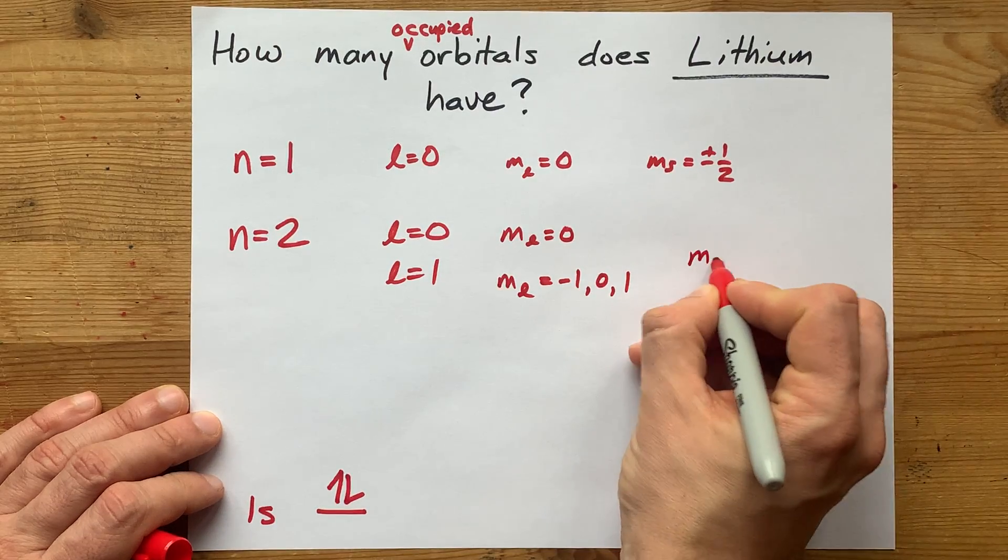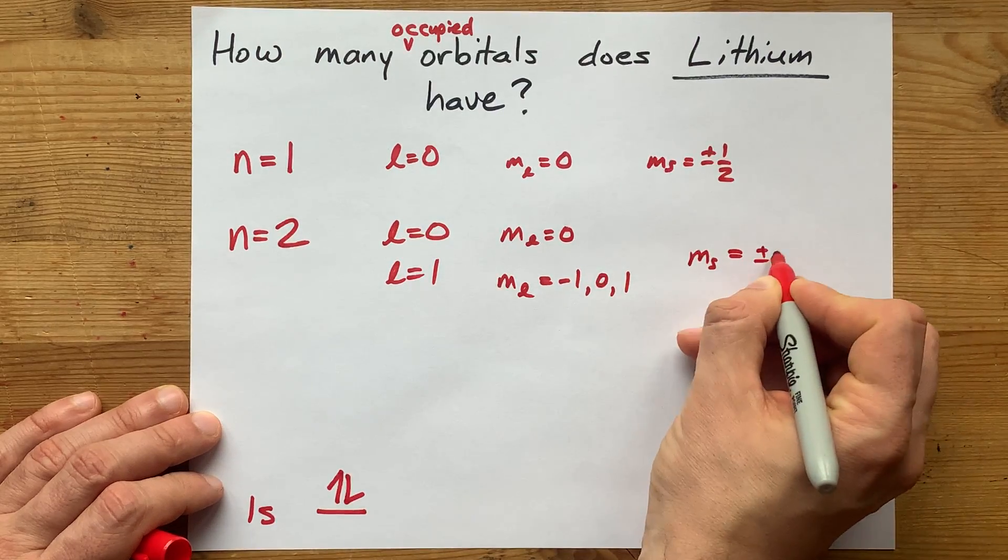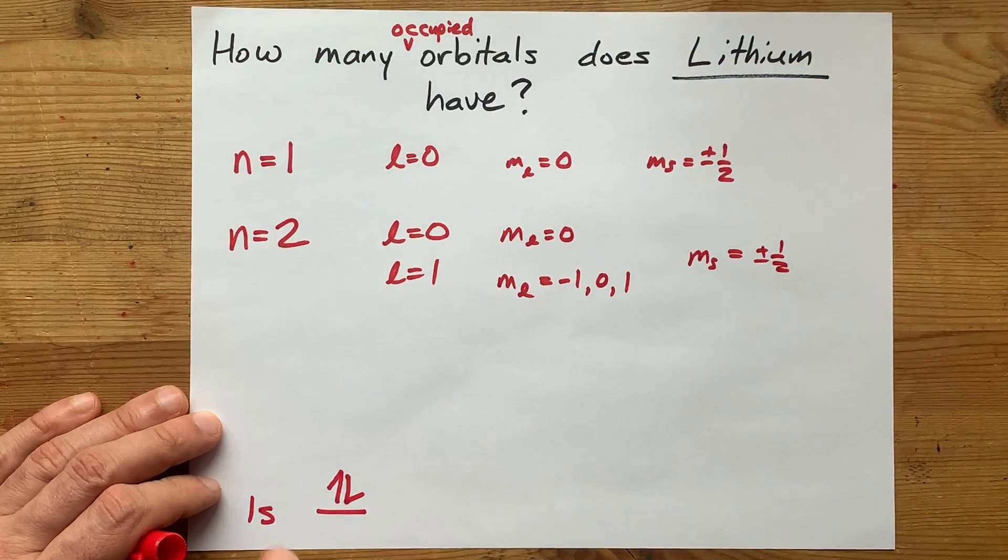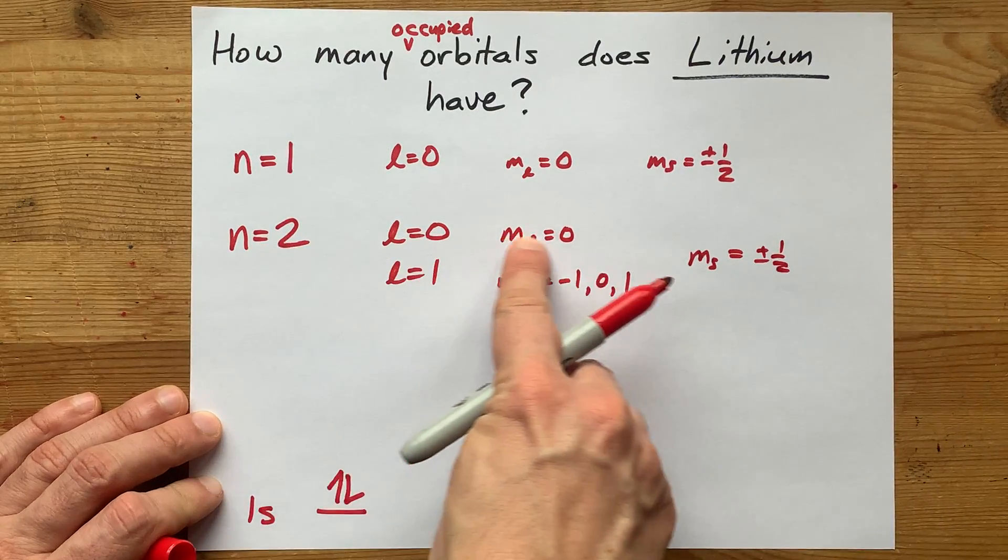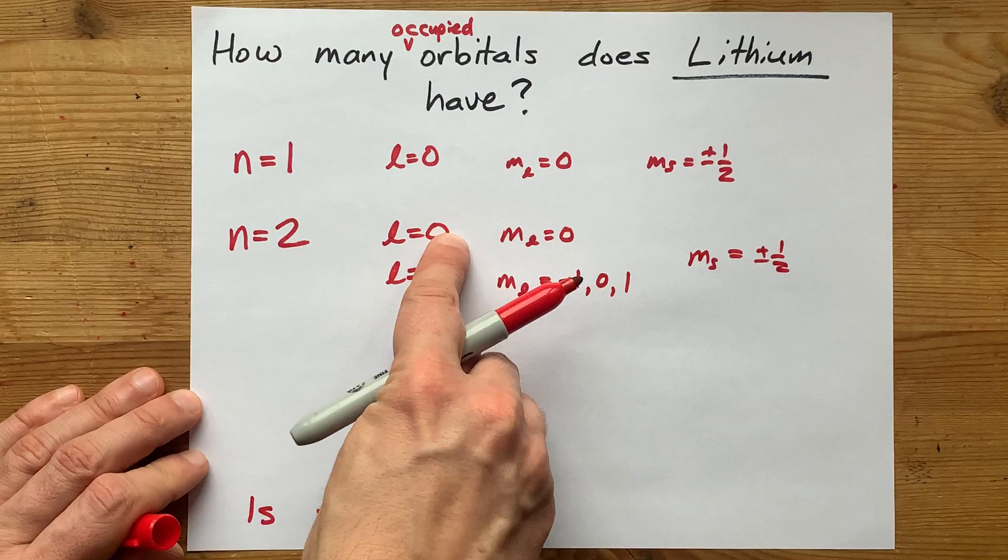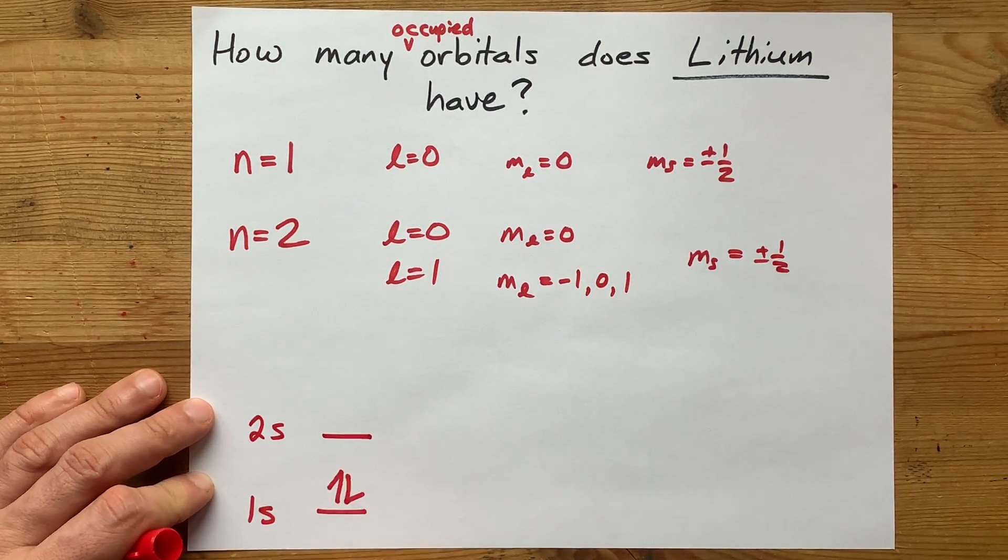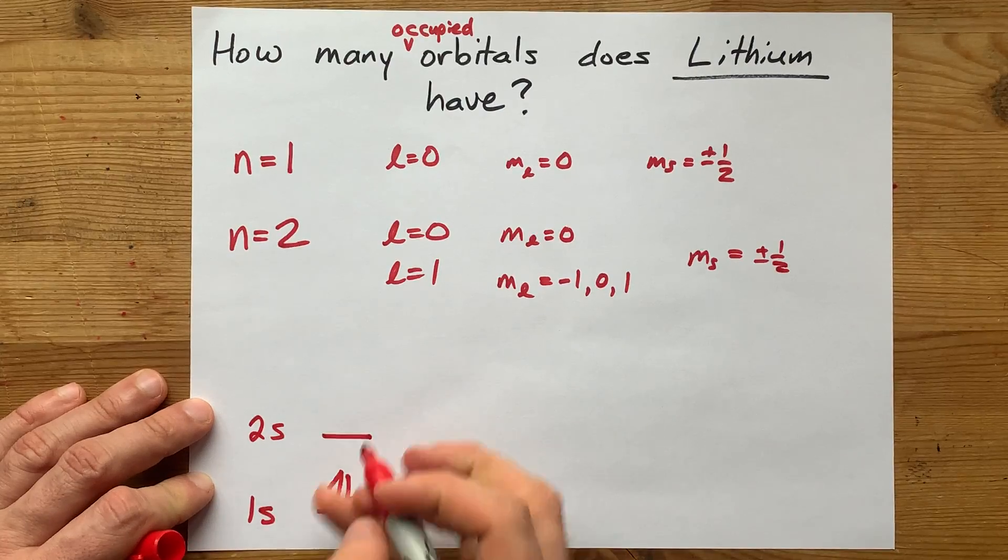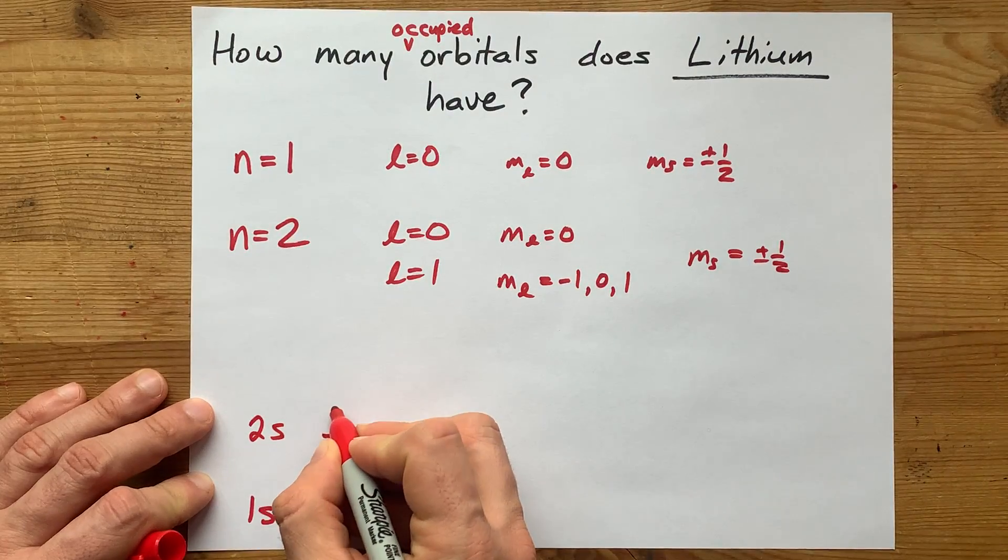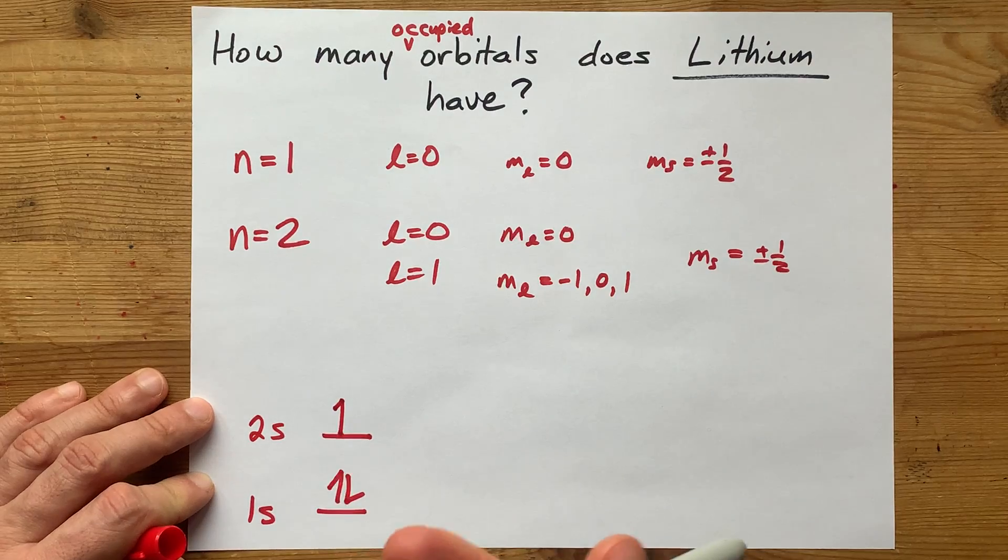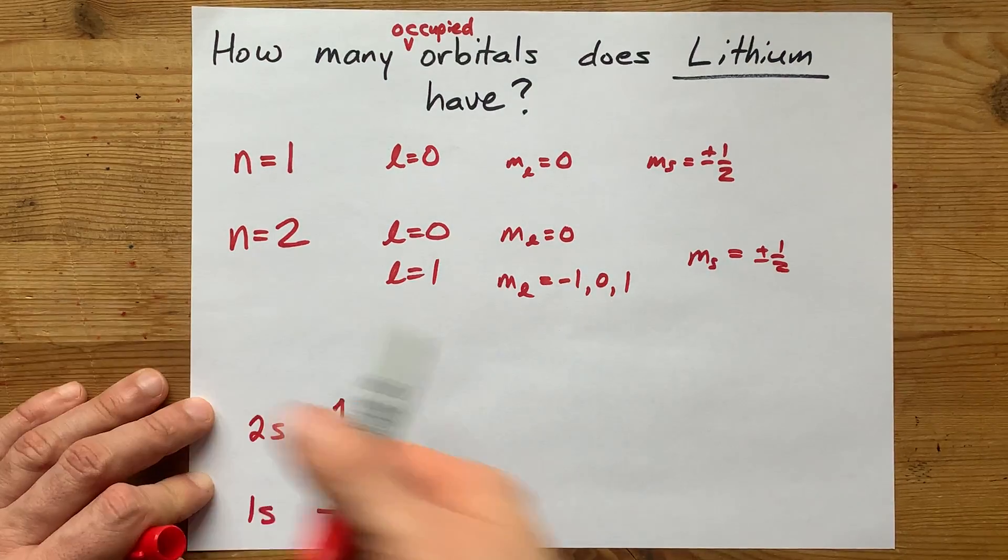And then for each of those, the spin quantum number can be plus or minus 1 half. But the fact that there's only one combination here, n equals 2, l equals 0, is why the 2s sublevel only has one orbital. Spin quantum number means you can fit up to two electrons in there, but actually lithium only has one, like we said.